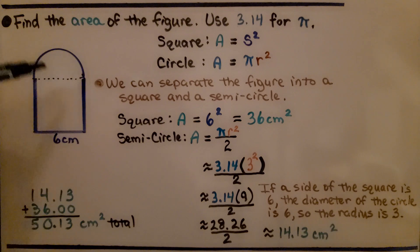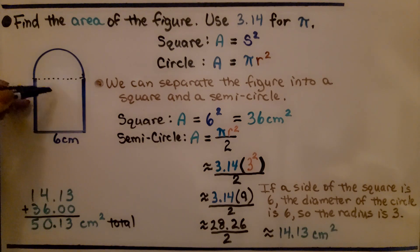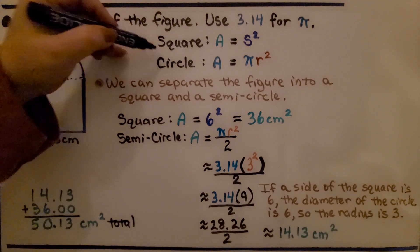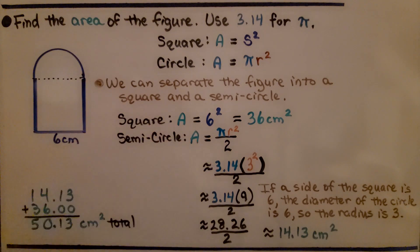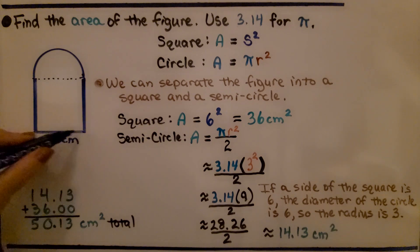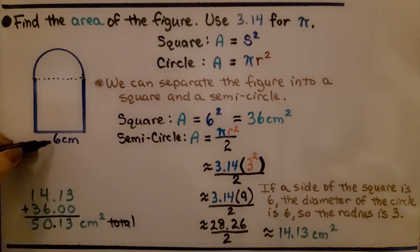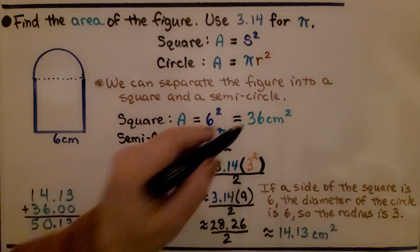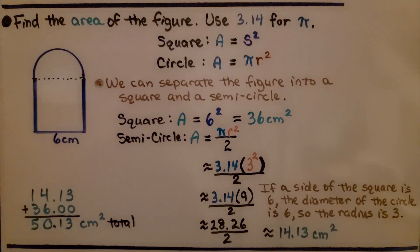This composite figure requires using 3.14 for pi. We can split it into a square and a semicircle. The side of the square is 6 centimeters, and since all sides of a square are equal, we do 6 times 6 to get 36 centimeters squared for the square's area.